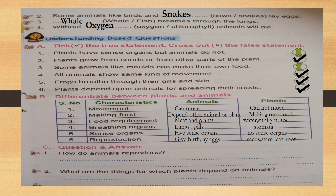Second one: plants grow from seed or from other parts of the plant. Is it true? Yes — plants can grow from seeds, stem, leaves, and root. Give tick. Those who are correct — very good children. Check the answer.